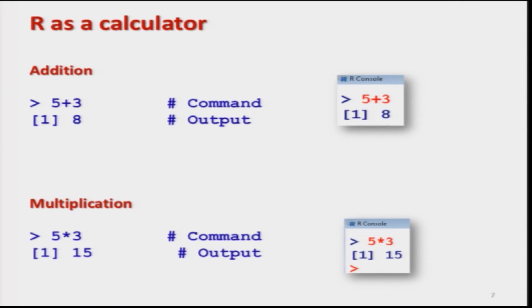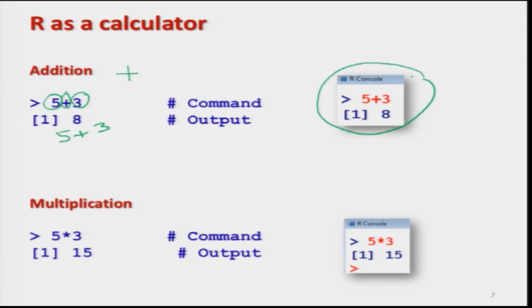Now I will cover the basic operations. For addition, the operator is the plus sign — the usual mathematical sign. For example, if I want to add 5 and 3, I simply type 5 plus 3 and this gives the value 8.